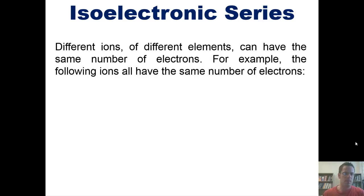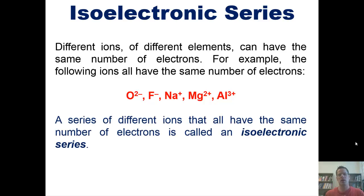Different ions of different elements can have the same number of electrons. For example, the following ions all have the same number of electrons. If you look at the periodic table, you'll notice that all of these have the same electron configuration of neon. So a series of different ions that all have the same number of electrons is called an isoelectronic series.